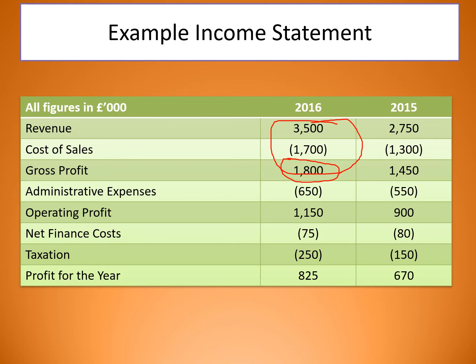Once we've worked out our gross profit, we know how much we're going to get in from our sales and from the production line. Then we need to take into account our administration expenses — here they are at £165,000 — things like rent, etc. Take away the administrative expenses and that gives us our total operating profit, which is how the business is actually running from all of its expenses: £1.15 million.